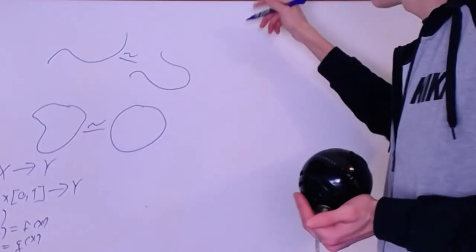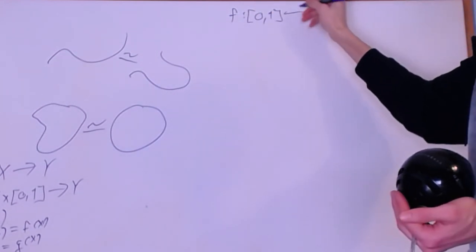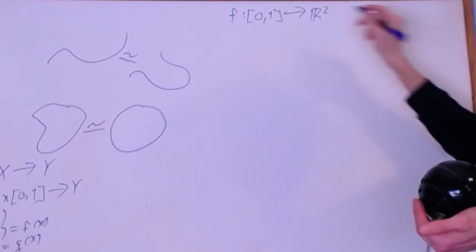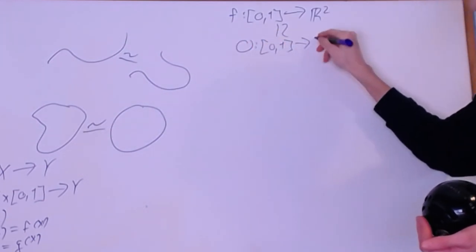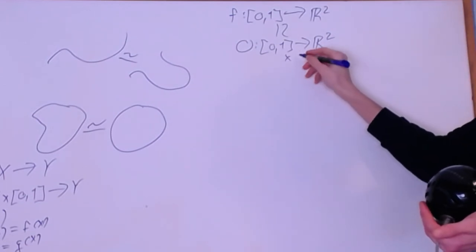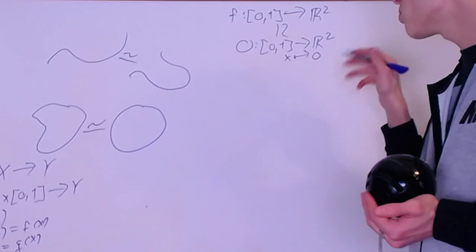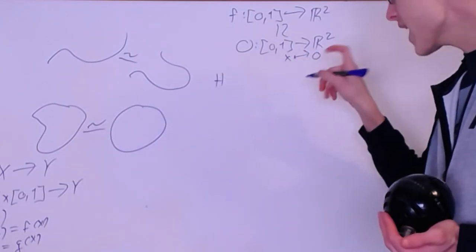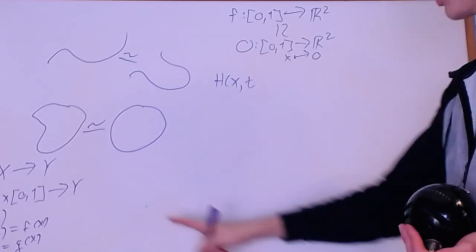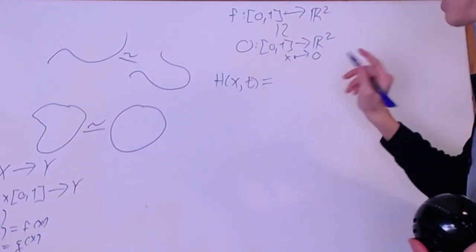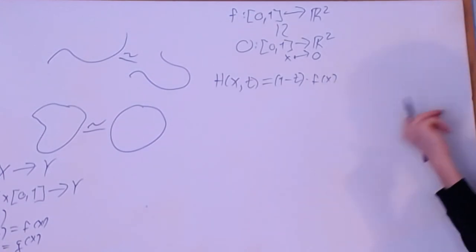Let's do an example. Let's say we have any continuous map f which takes you from the closed interval [0,1] into ℝ². I will prove that this is homotopic to the constant zero map from [0,1] into ℝ², which sends every point x to just the zero vector. I'll define the homotopy H(x, t), where x is from [0,1] and t is also from [0,1], to be (1 − t)·f(x). This is very obviously continuous.